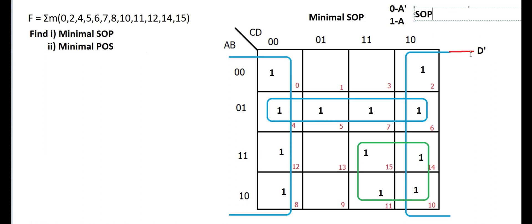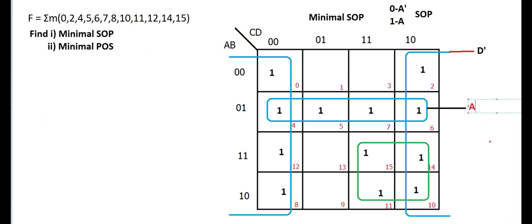Now we have one expression: D'. For the second group — this quad — all four ones lie in the same row, so their A-B value is the same. A equals 0 and B is the same, so we take A' and B. If all cells are in a single row or column you retain only those common variables, giving the expression A'B.